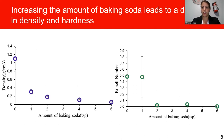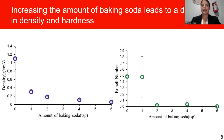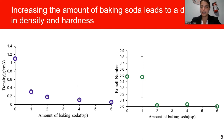When looking at our first aim, we looked at the amount of baking soda and found that increasing the amount of baking soda leads to a decrease in density and hardness of the candy. In the first graph, we can see a continuous decrease in density as we increase the amount of baking soda. This is because when we add more baking soda, more of it reacts, causing more bubbles in the candy, which decreases the density and increases the volume.